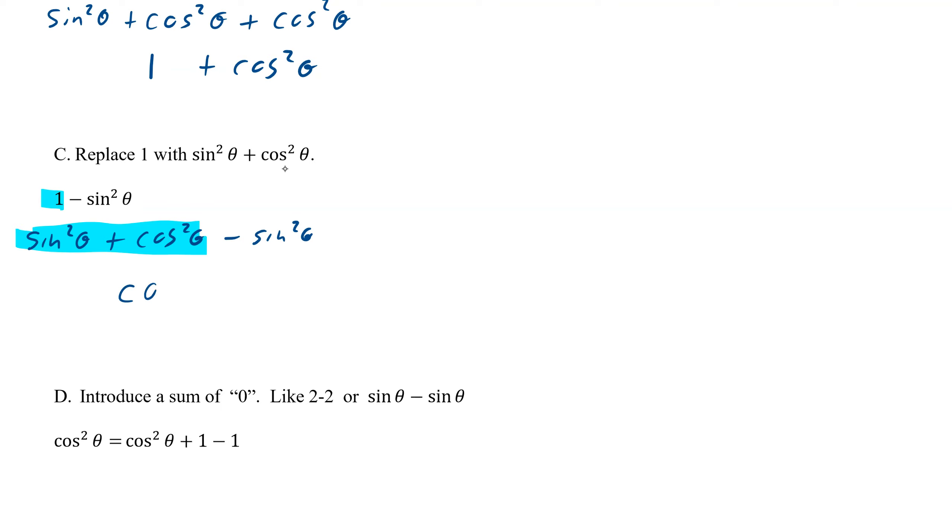You can see that the sine squared and the cosine squared cancel. The sine squared and the sine squared cancel, giving us cosine squared theta. So that's a trick too, replacing a 1.